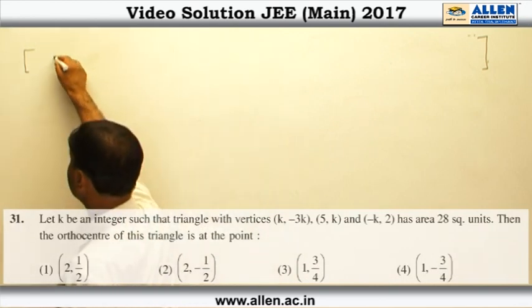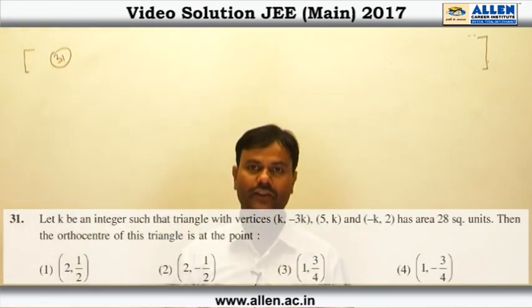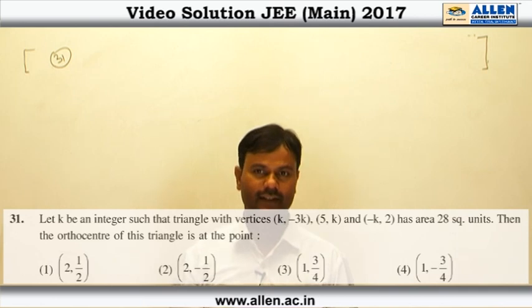Question 31. In this question, we are given vertices of the triangle and also we are given the area of the triangle, and we have to find the orthocenter of the triangle. But in the vertices of the triangle, first we have to find the value of K, and after finding K, we have to find the orthocenter of the triangle.